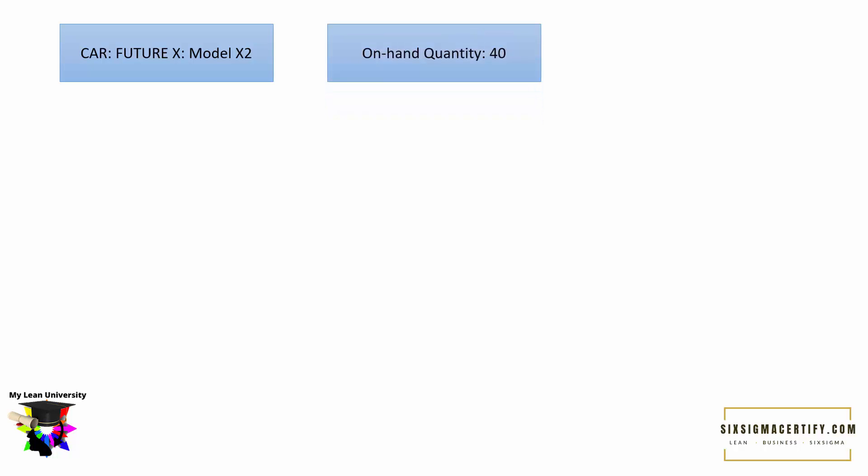Suppose our job is to manufacture a car of the Future X family, Model X2. We have 40 cars of Future X Model X2 in inventory, and the order policy is 40. An order policy of 40 means we cannot produce any random number of cars based on demand. If we get an order for only five cars and have no inventory, we must still produce 40 units to meet demand, as it is more economical.